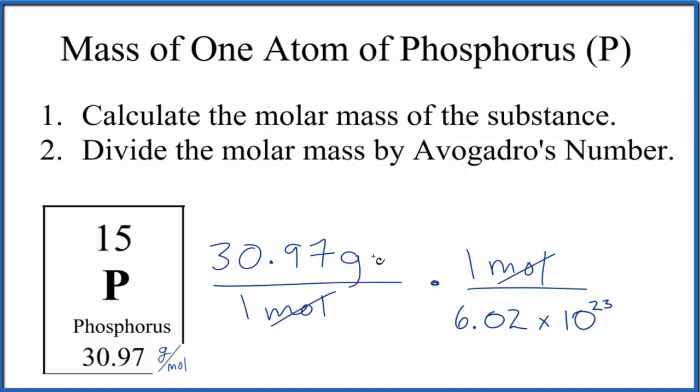What we're really doing is just dividing the atomic mass of the substance by Avogadro's number, but this is a good way to make sure you get the right answer.